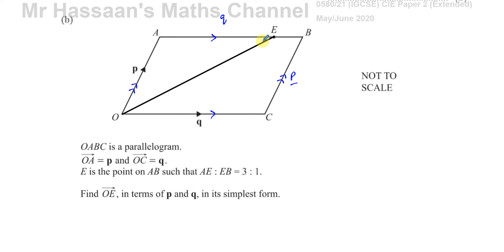It says OA is P and OC is Q. E is the point on AB such that the ratio of AE to EB is 3 to 1, so this would be 3 parts and this would be 1 part, so altogether there's 4 parts to this line you could say.